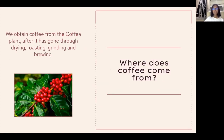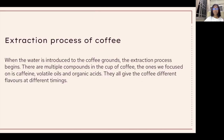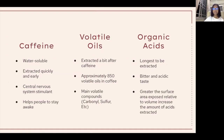Coffee is obtained from the Coffea plant after it has gone through drying, roasting, grinding, and brewing. When water is introduced to the coffee grounds, the extraction process begins. There are multiple compounds in a cup of coffee. The ones we focus on are caffeine, volatile oils, and organic acids. They all give the coffee different flavours at different timings.